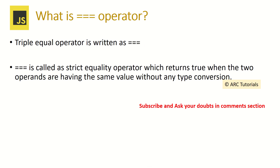What is the triple comparison operator? The triple equal to (===) operator is a strict equality operator which returns true when the two operands have the same value without any type conversion. It means both the compared values must be exactly the same value and also of the same data type.